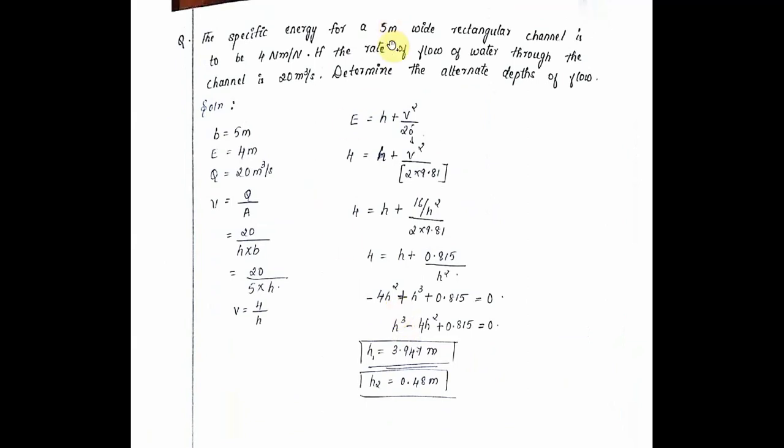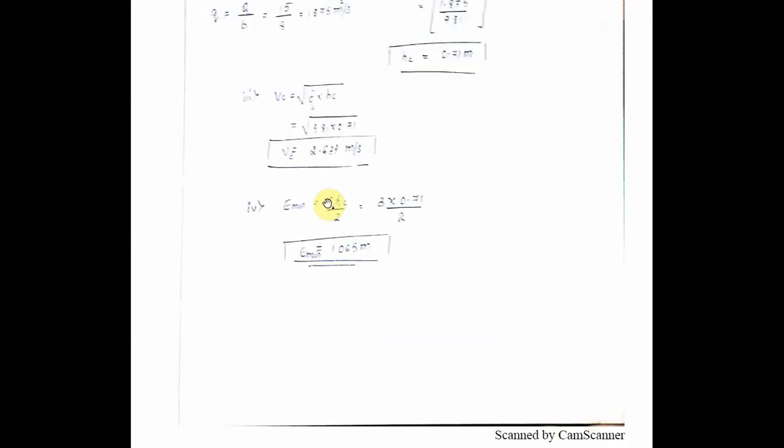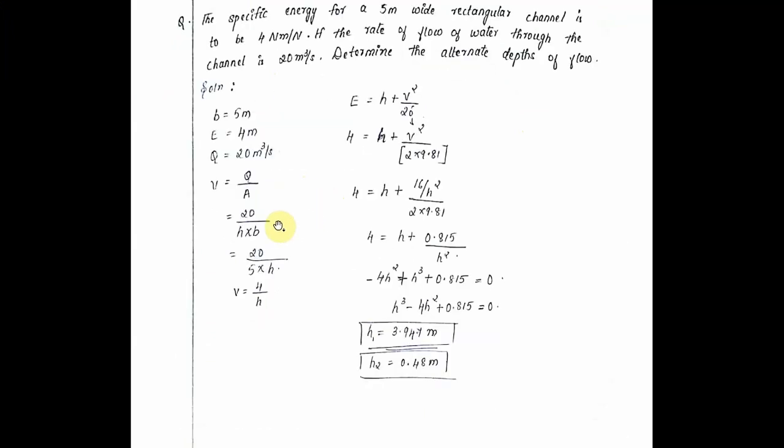Next one: the specific energy of a 5 meter wide rectangular channel is to be 4 meters. If the rate of flow of water through the channel is 20 cubic meters per second, determine the alternate depths of the flow. Solution: breadth equals 5 meters, E equals 4 meters, Q equals 20 cubic meters per second. Velocity equals Q by A, that is 20 divided by h into b.